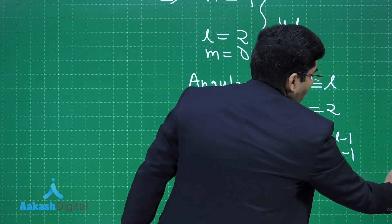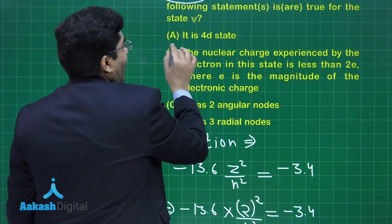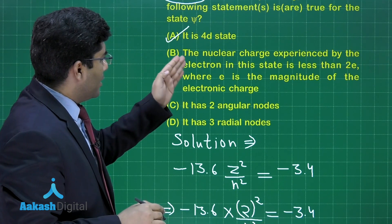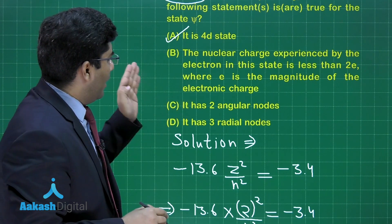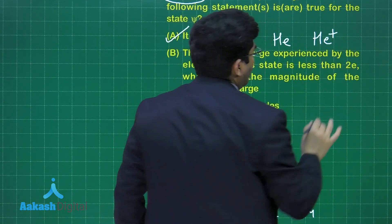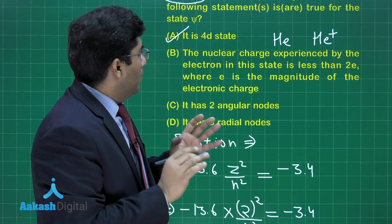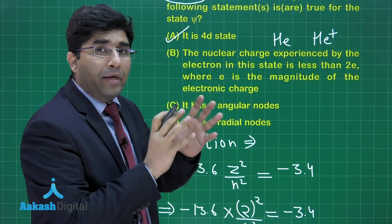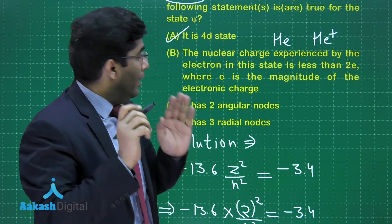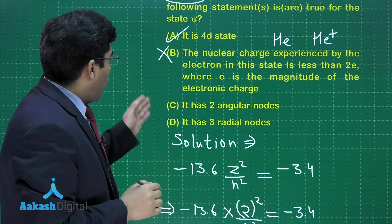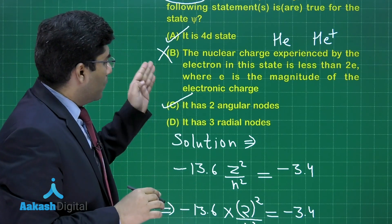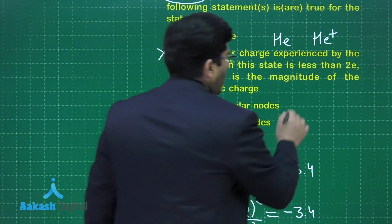So the total number of radial nodes is 1. Option (A) — it is the 4d state — is correct. Option (B) says the nuclear charge experienced by the electron is less than 2e. In He+, there is only a single electron, so there is no screening effect, meaning the full nuclear charge of 2e is experienced. Therefore option (B) is wrong. Option (C) — it has two angular nodes — is absolutely correct. Option (D) — it has three radial nodes — is incorrect.